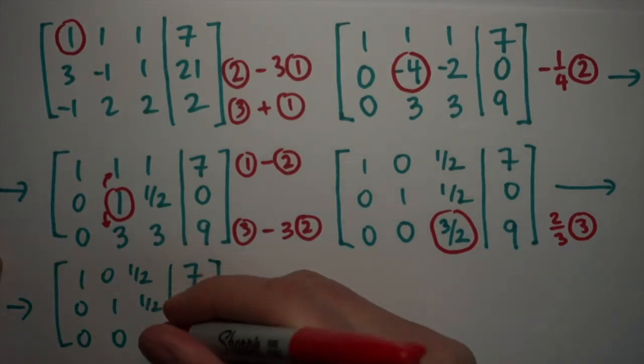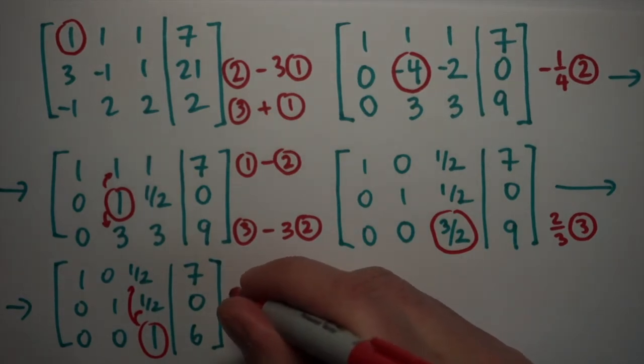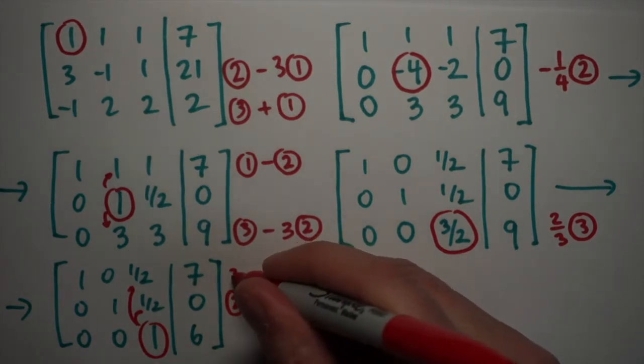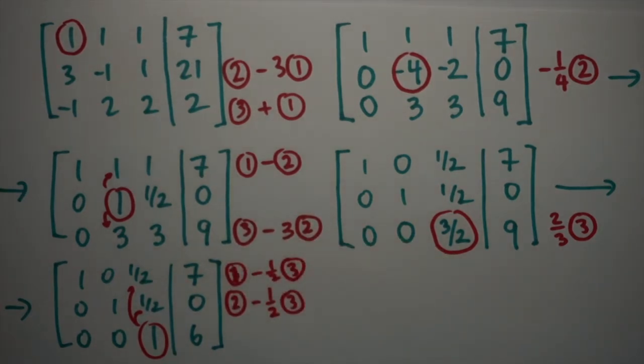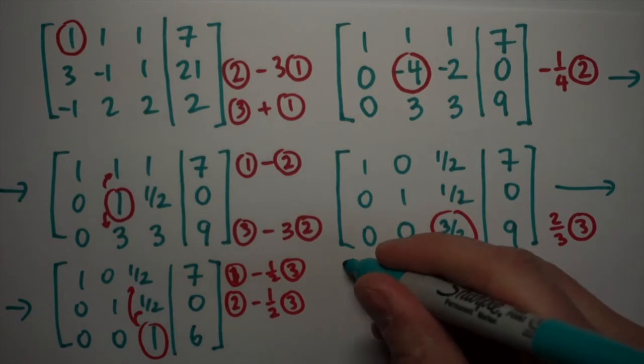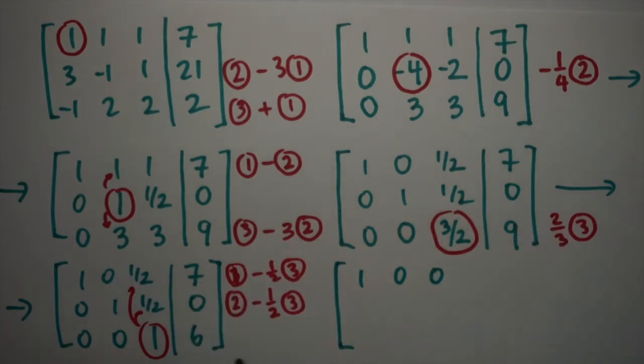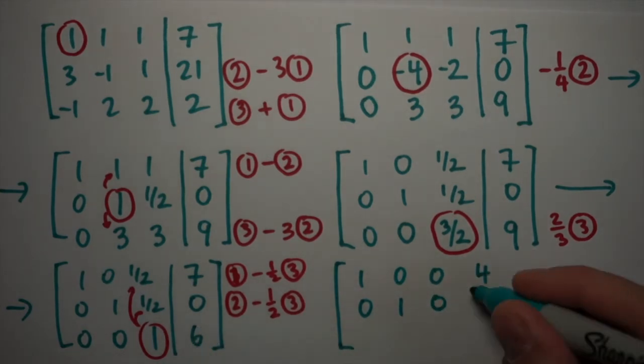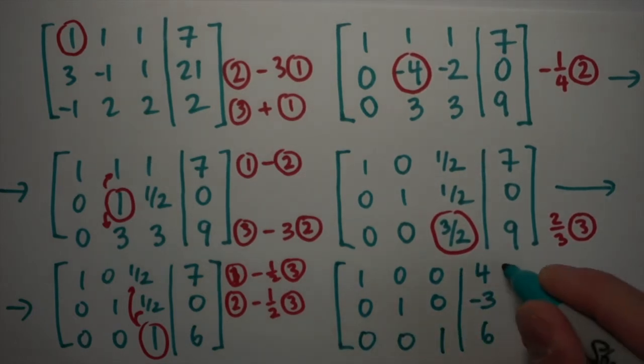Now that this number is a one, I can use it to get rid of the numbers above it by multiplying row three by a half and subtracting it from row two and row one. So row two minus a half times row three, and then row one minus a half times row three. So I perform these actions. My last row is going to remain unchanged. My first row becomes one, zero, zero. And then seven minus a half of six is seven minus three or four. This one becomes zero, one, zero. And then zero minus a half of six is negative three. And the last one remains unchanged, zero, zero, one, six.